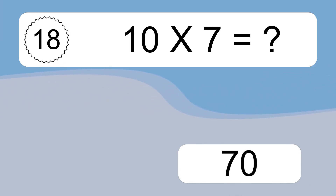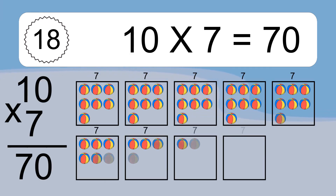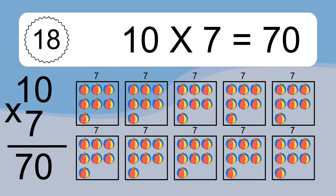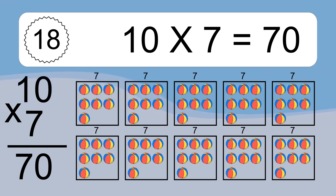10 times 7 equals what? 10 times 7 equals 70. We have 10 boxes and each box has 7 colorful balls inside. If you count all the balls in all the boxes together, you will have 10 times 7 balls. This equals 70 balls.